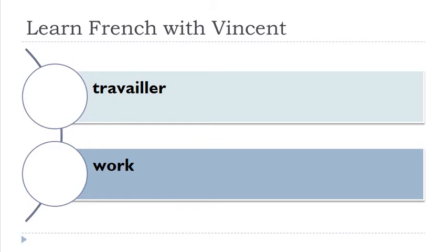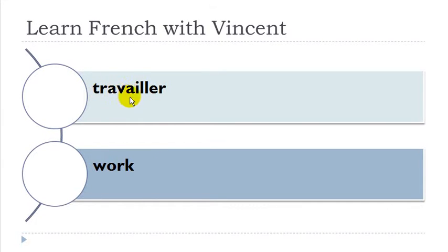Travailler. Remember, when you've got 'i' and then double 'l' and a vowel after, it sounds like 'y'. Travailler. Travailler. Travailler.